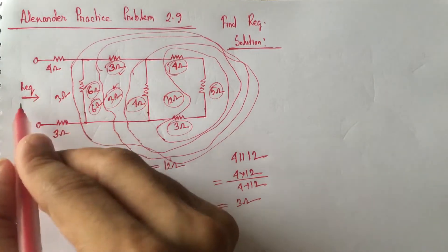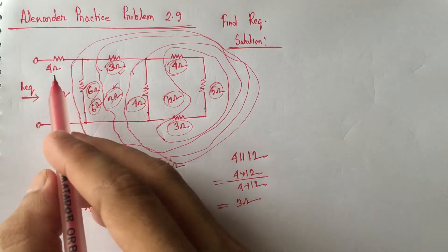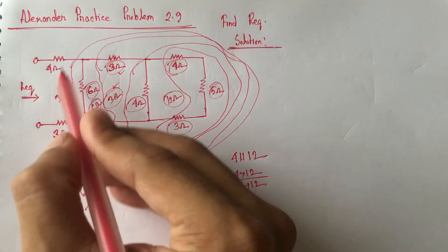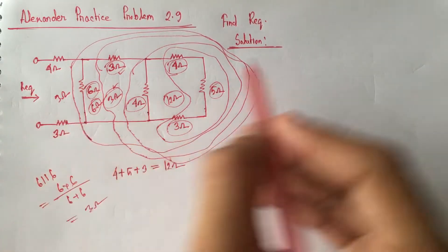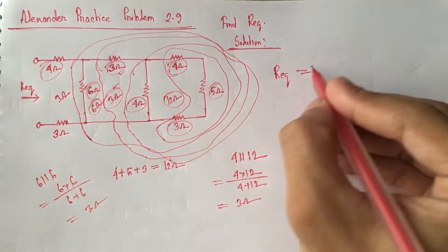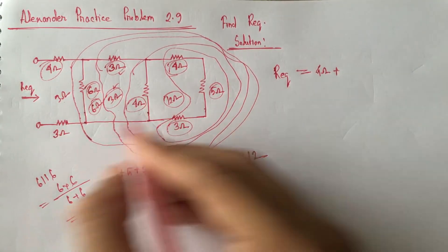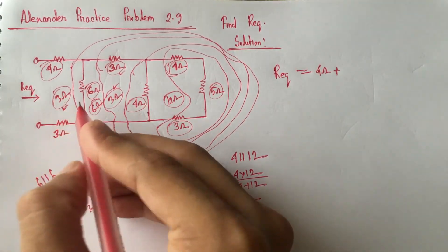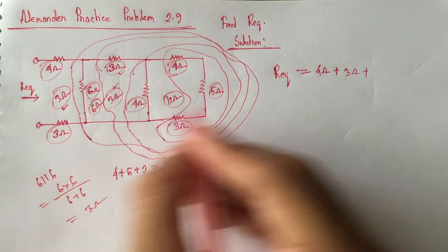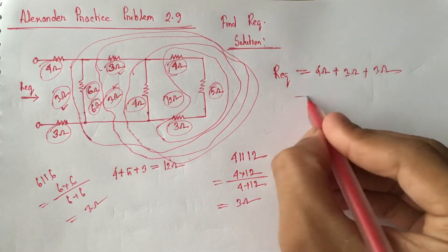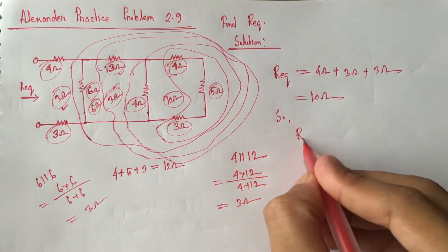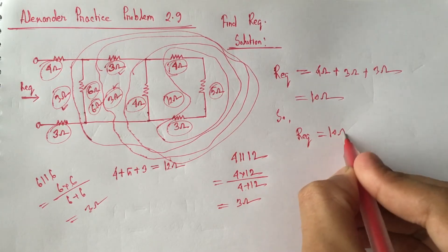Now we see that R equivalent will be a direct series combination of 4 ohm, 3 ohm, and 3 ohm. Since all three resistances are in series, R equivalent equals 4 ohm plus 3 ohm plus 3 ohm, which gives us 10 ohm. Here we get R equivalent is 10 ohm.